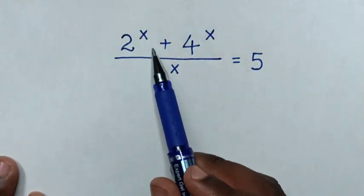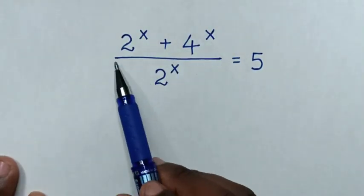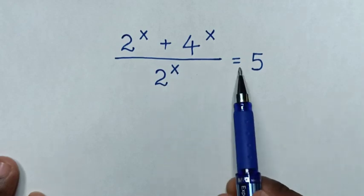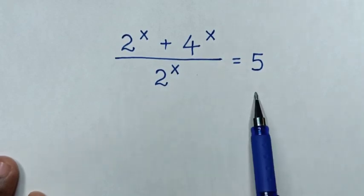Hello! How to solve 2 power of x plus 4 power of x over 2 power of x equals 5 to find the value of x from this equation.